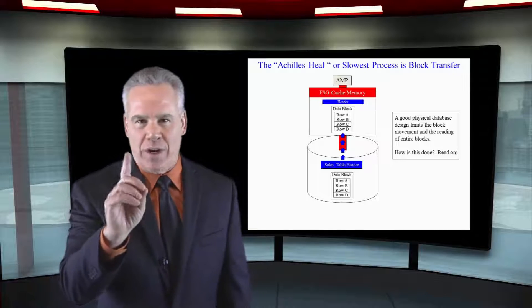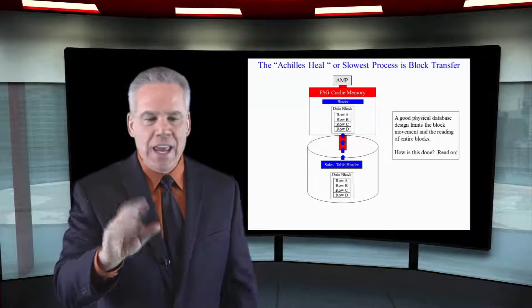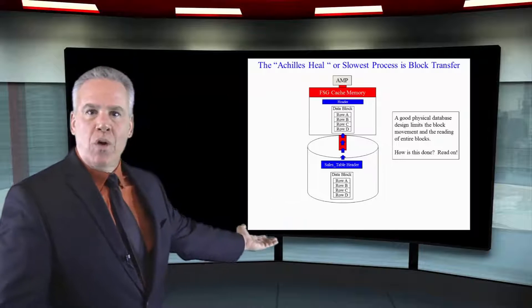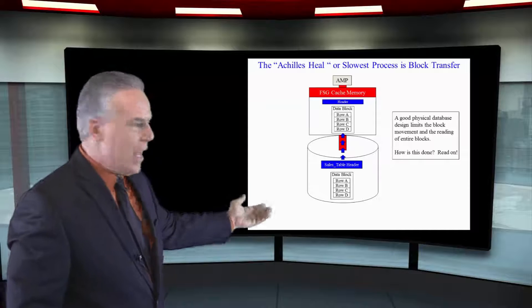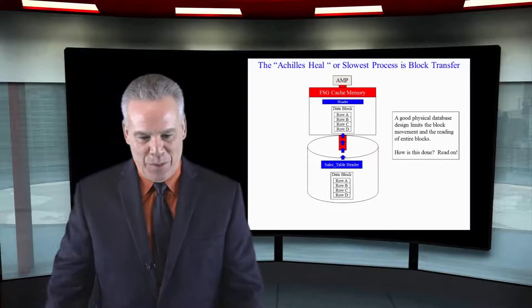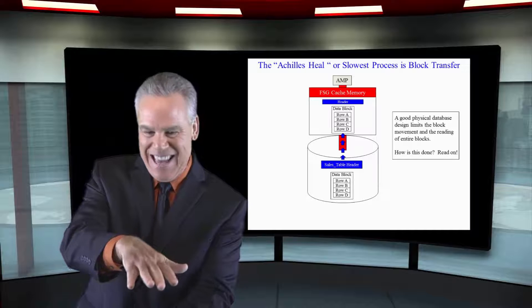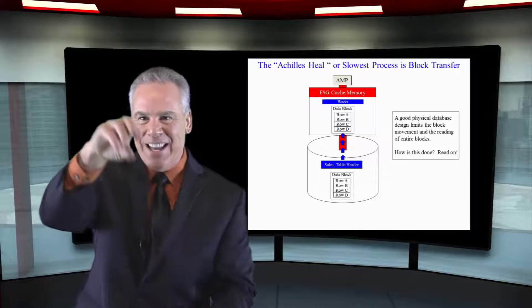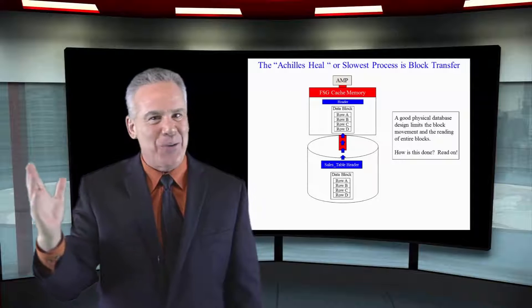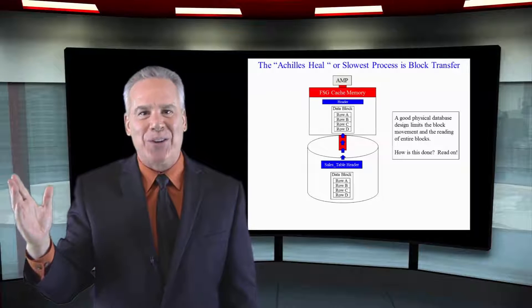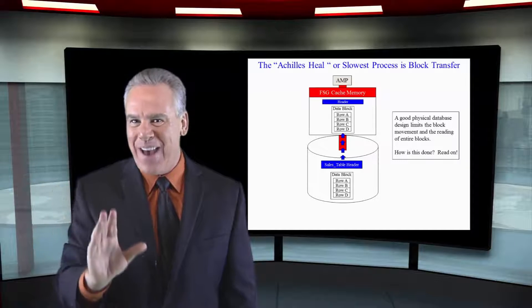Now this is pretty crazy, but this is the way it works. If you wanted to read one row and even one column in this example, it would still need to bring the entire block from disk into memory just for that one little read. That's just the way it works. It's called the cold hard facts.